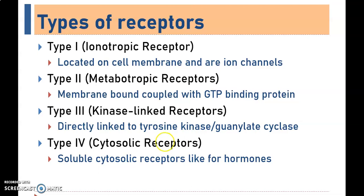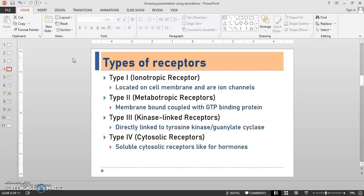As all of you know, there are four different types of receptors: Type 1, Type 2, Type 3, Type 4, and some brief information about each receptor is given here. So it is mandatory to put the information one tab forward below the Type 1 receptor, so that it is easy for PowerPoint to convert the text into beautiful designs. Let's see this.